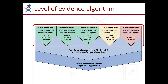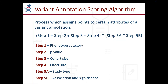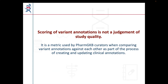Each individual variant annotation included in the clinical annotation is scored in a five-step process. Each step scores a particular attribute of the variant annotation. These scores are combined to produce a total score for the variant annotation. It is important to understand that the score given to a variant annotation is not an indication of the quality of the study. The scoring system was designed by PharmGKB as a way to quickly compare variant annotations against each other as part of assigning a level of evidence to clinical annotations.